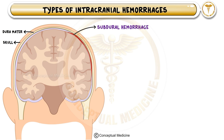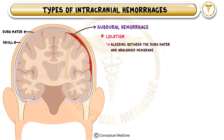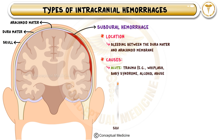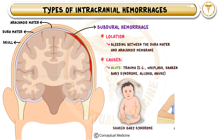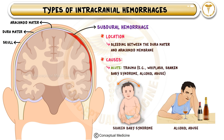Subdural hemorrhage is bleeding between the dura mater and the arachnoid membrane. Unlike epidural hemorrhage, which is arterial, subdural hemorrhages result from ruptured bridging veins, making the bleeding slower but more insidious. This type of hemorrhage is commonly seen in elderly individuals due to brain atrophy, which stretches and weakens the veins. Other causes include shaken baby syndrome in infants and chronic alcohol abuse, both of which predispose patients to repeated trauma.